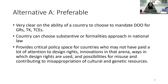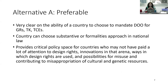Whereas Alternative A is very clear. It's saying that countries have the space to require disclosure of origin if they so desire for GRs, TK, TCEs. A country can choose to just have a formal requirement, or if they want to make it part of the substantive law, that's up to the country. But policy space here is really important.